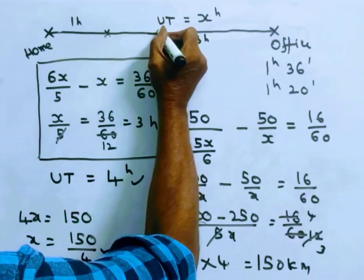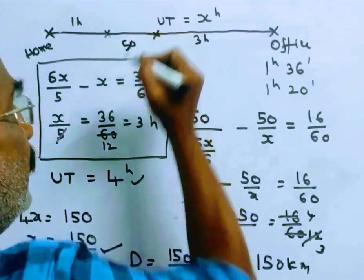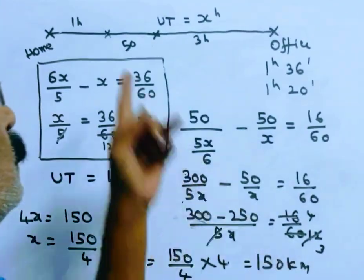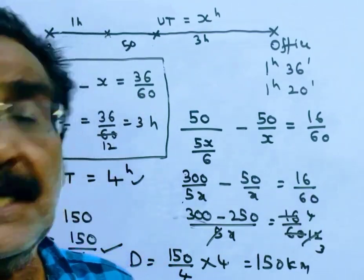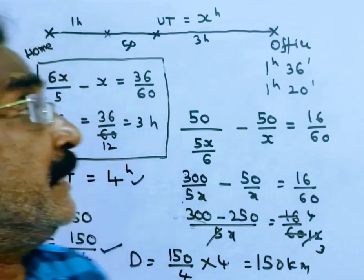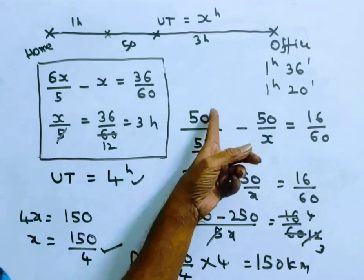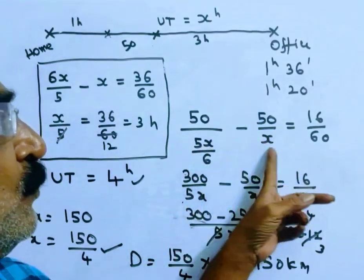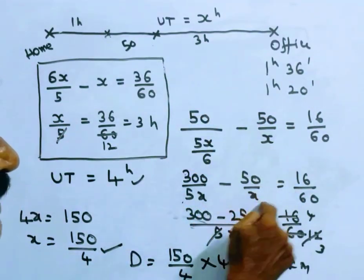Looking at the second condition: if the accident had occurred 50 kilometers further along, he would have been late by only one hour twenty minutes instead of one hour thirty-six minutes. The difference is sixteen minutes. Traveling that extra 50 kilometers at reduced speed versus usual speed accounts for the 16-minute difference. So: 50 divided by (5/6 of x) minus 50 divided by x equals 16/60, which gives 300/5x minus 50/x equals 16/60.